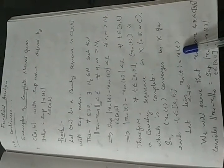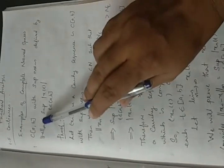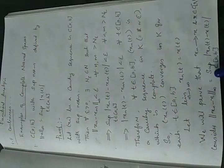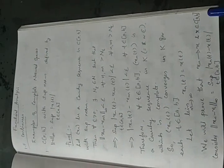So we get a function X, and we will prove that this function X belongs to the space C[a,b] and that the norm of Xn minus X tends to 0 as n tends to infinity.